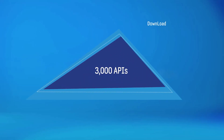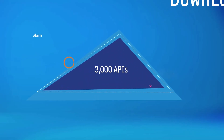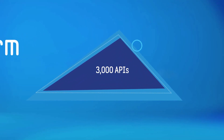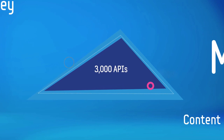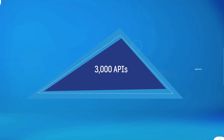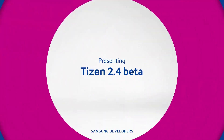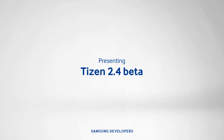With over 3,000 new APIs added, the next version of Tizen is sure to attract a lot of attention with new features. Hi everyone, it's Michael from Samsung Developers, and today I'm happy to introduce all of you to Tizen 2.4 Beta. In today's episode, I'll show you 7 features that make Tizen more useful and fun to use.